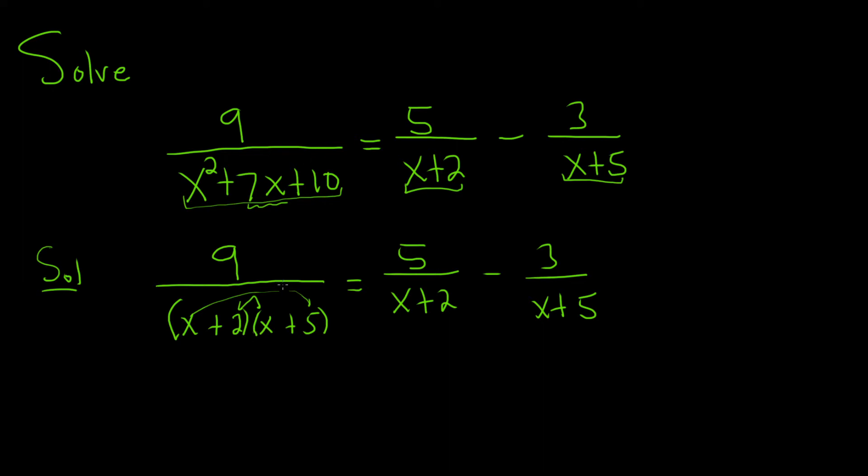All right, now we have to get rid of the fractions. So in order to get rid of the x plus 2, we're going to have to multiply by x plus 2. And in order to get rid of the x plus 5, we'll also have to multiply by x plus 5. So if we multiply by both x plus 2 and x plus 5, we should be able to get rid of all of the fractions.